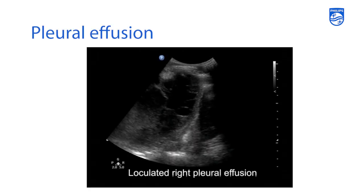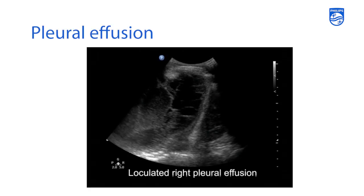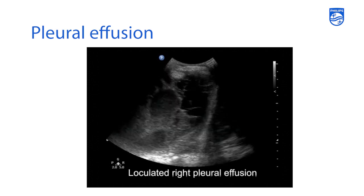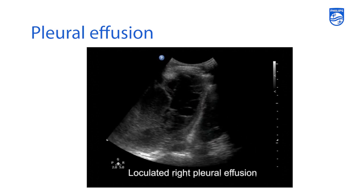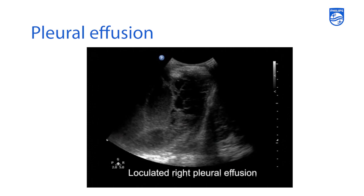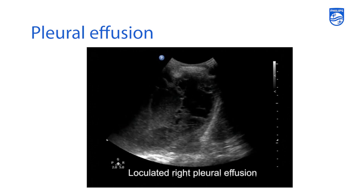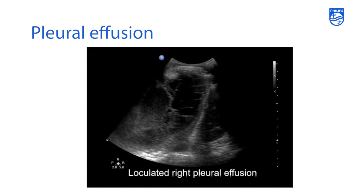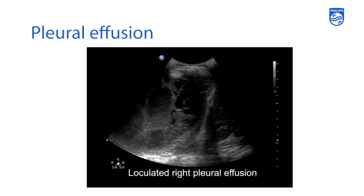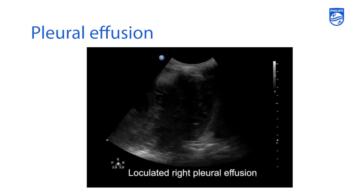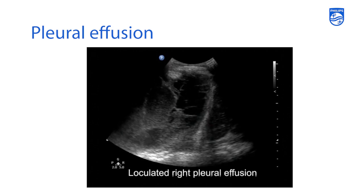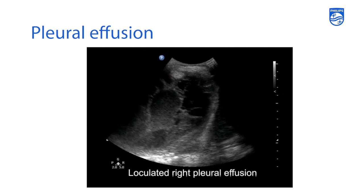Here's another example of a loculated right pleural effusion where you're seeing areas of pleural effusion that have been compartmentalized within septae and fibrous sorts of material, and this is oftentimes what you'll see in a patient with a complex pleural effusion that's been loculated.